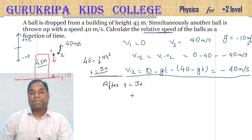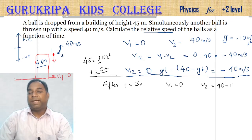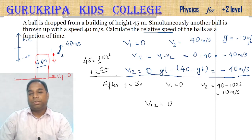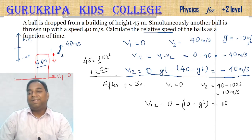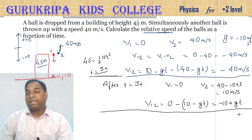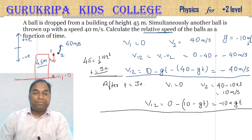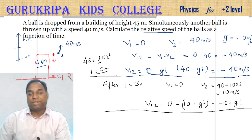After t = 3 seconds, ball 1 has stopped (velocity = 0). The velocity of ball 2 at t = 3s is 40 minus 10 × 3 = 10 meters per second. After t = 3 seconds, the relative velocity V1 with respect to 2 = 0 minus (10 minus g(t−3)) = minus 10 plus g(t−3). Eventually when ball 2 also hits the ground, relative velocity becomes 0.